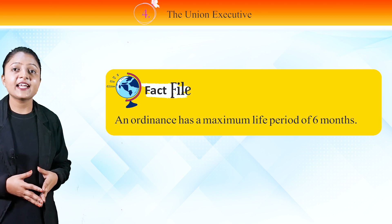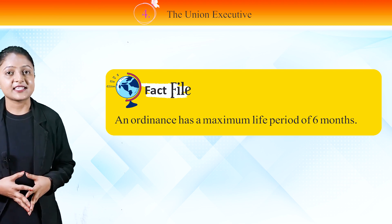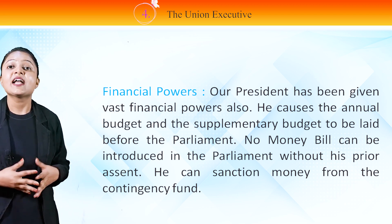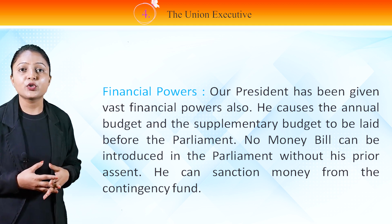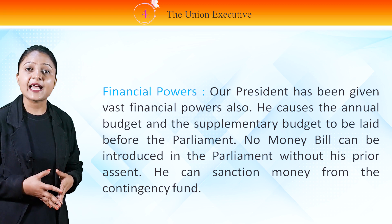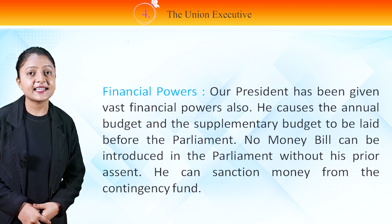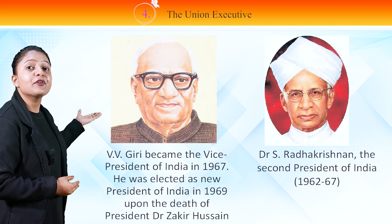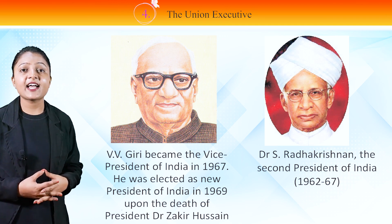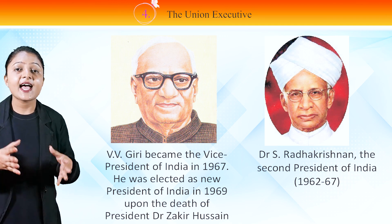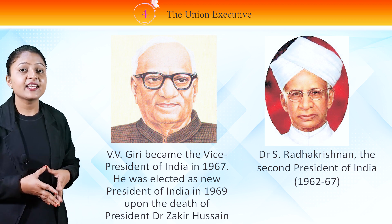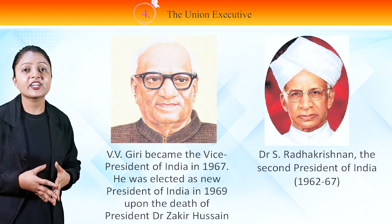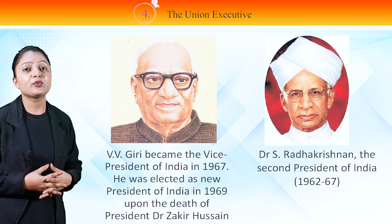Fact File: An ordinance has a maximum life period of 6 months. Financial Powers: The President has been given vast financial powers also. He causes the annual budget and the supplementary budget to be laid before the Parliament. No money bill can be introduced in the Parliament without his prior assent. He can sanction money from the Contingency Fund. In this image, you can see V.V. Giri, who became the Vice President of India in 1967 and was elected as new President of India in 1969 upon the death of President Dr. Zakir Hussain. In this image, you can see Dr. S. Radhakrishnan, the Second President of India from 1962 to 1967.